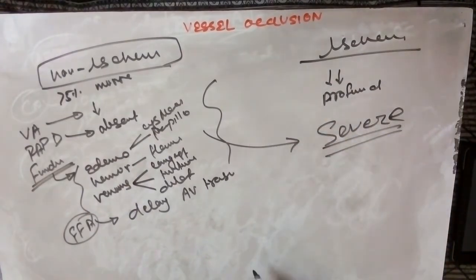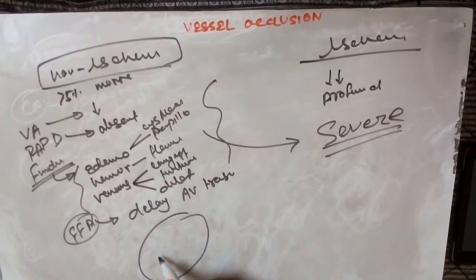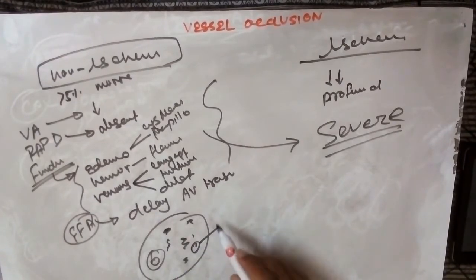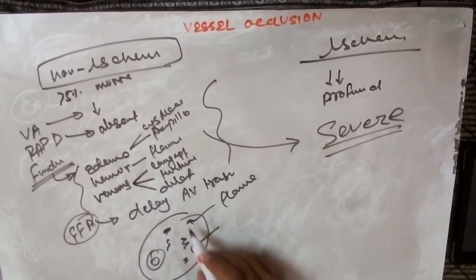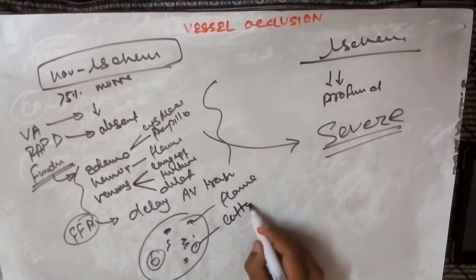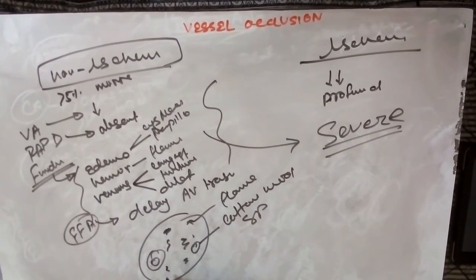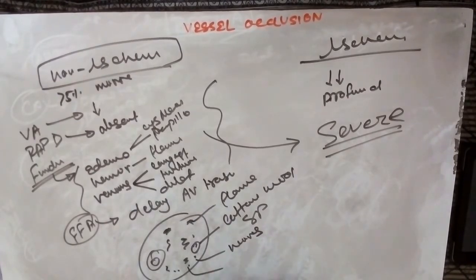On a fundus diagram, you can see flame-shaped hemorrhage everywhere around the macula, indicating superficial vessel involvement, along with cotton wool spots. Neovascularization can also be clearly seen, and pigmentary changes may be present as well.